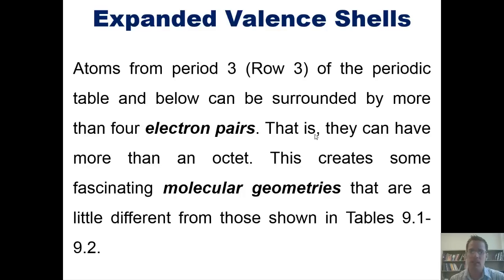The reason primarily is because those atoms have d orbitals, some of which on row three, for example, sometimes are not occupied by electrons. So once again, don't freak out when you come across atoms from row three or below that have more than eight electrons around them in certain molecules. The beautiful thing about it is that it creates some very elegant and fascinating molecular geometries that are a little different from the ones shown in tables 9.1 and 9.2 in our text, which I'll show to you in this lecture.